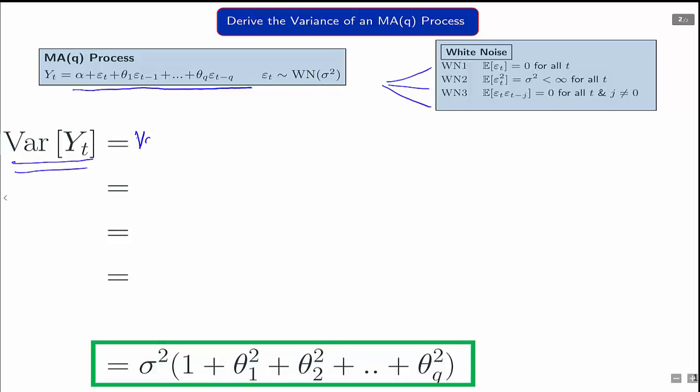So first, we just plug in Y_t from above. So we have from the definition of an MA(Q) process that it looks as such.